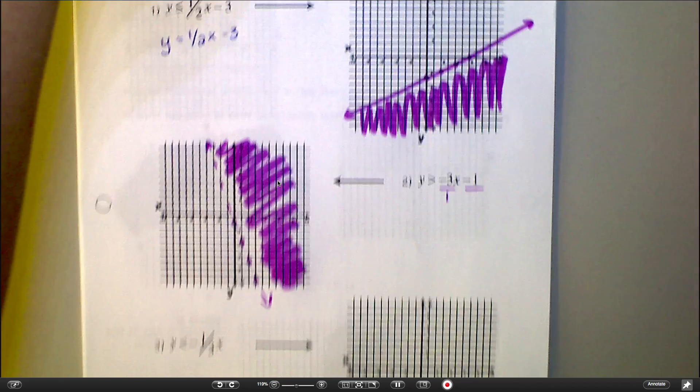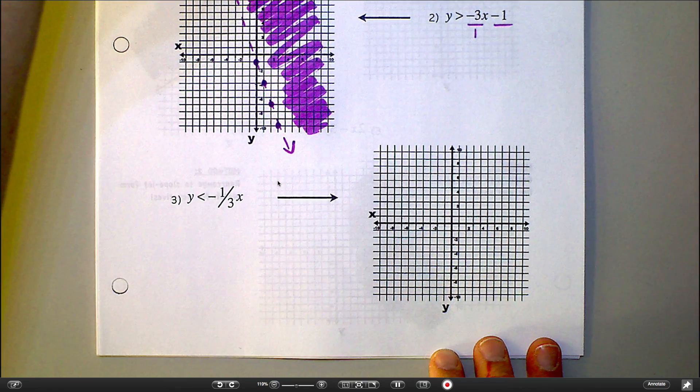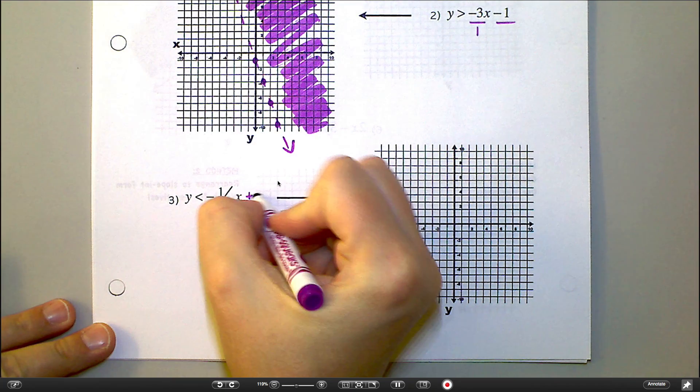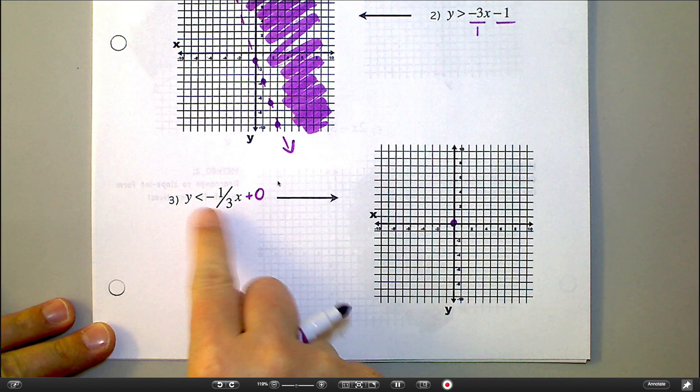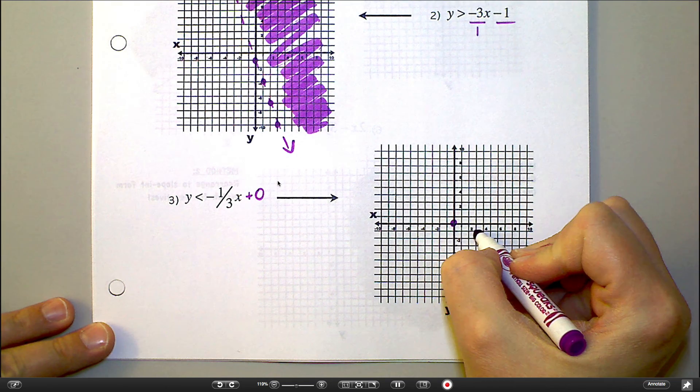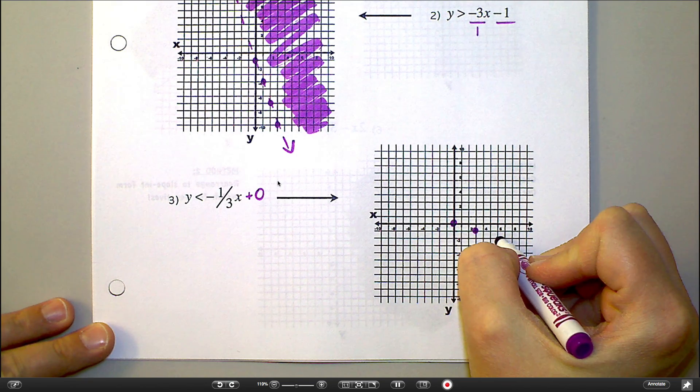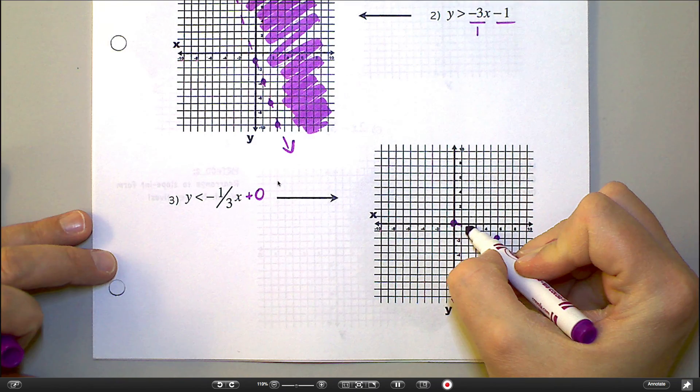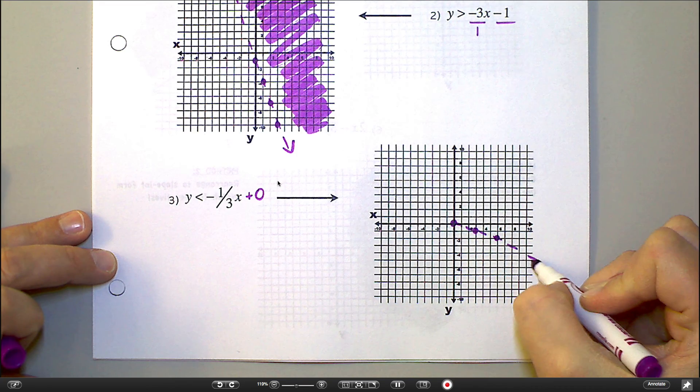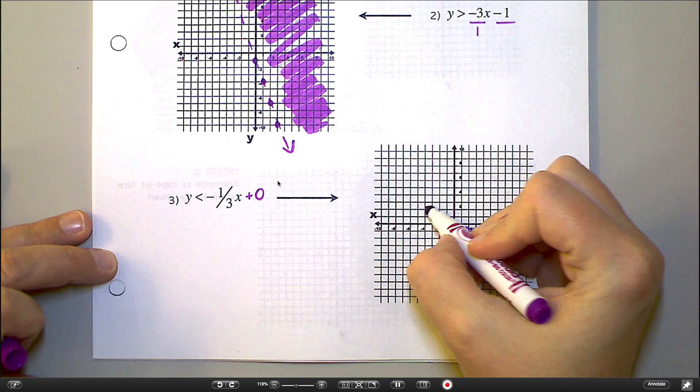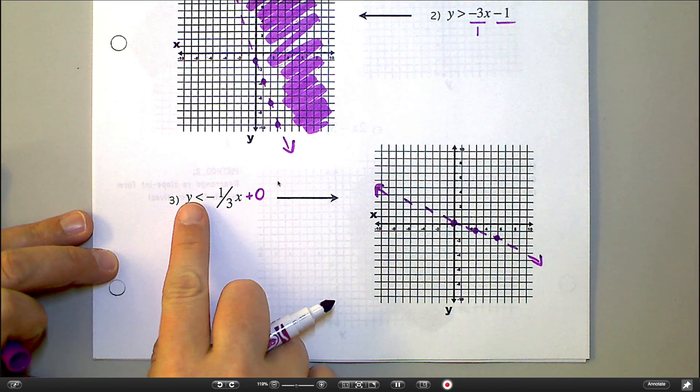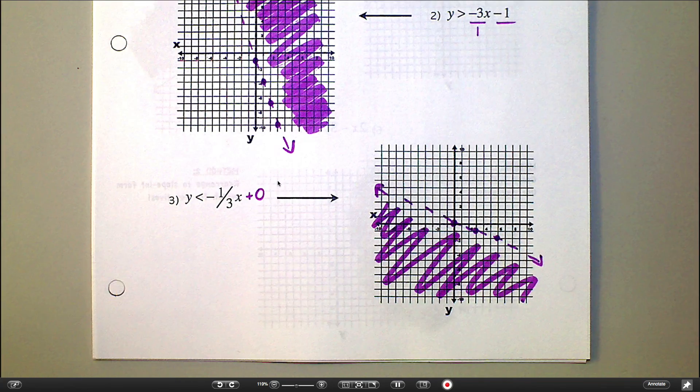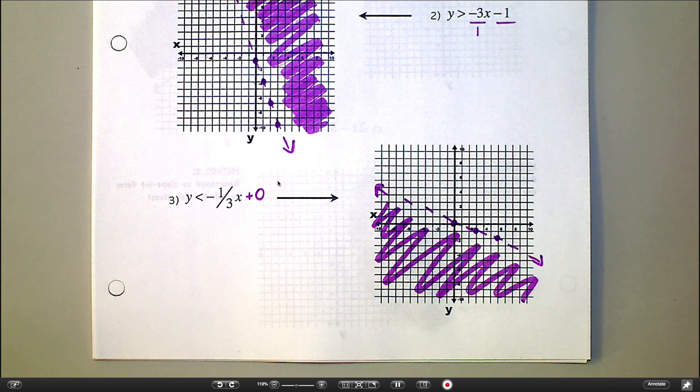Okay, number 3. y is less than -1/3x. Well, my y-intercept there is really a 0, so I'm going to put a dot at 0. And then my slope is telling me to go down 1 and to the right 3, down 1 and to the right 3. There's no equal bar here, so I'm going to use a dotted line. And this is a less than, so less than means shade underneath the line. And there's my final answer for that one.